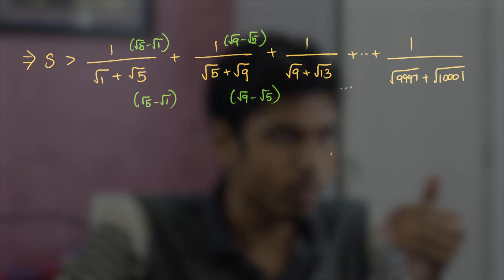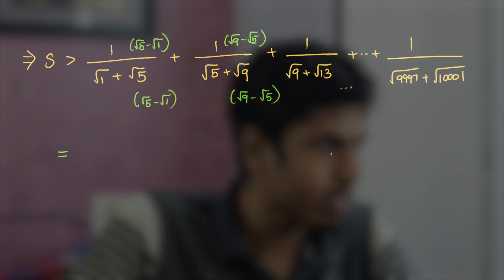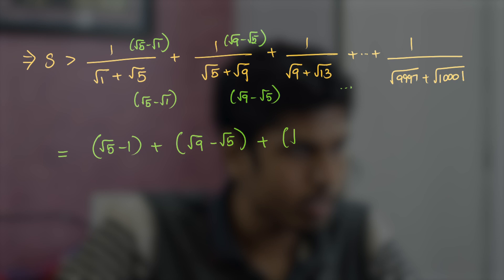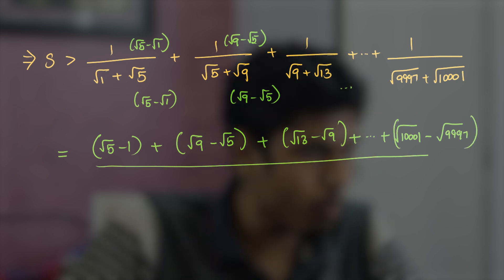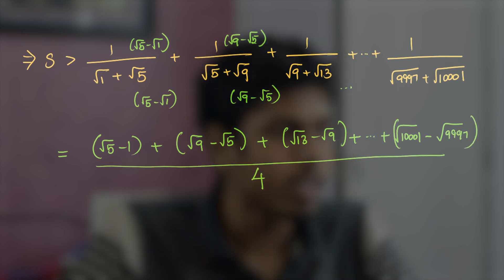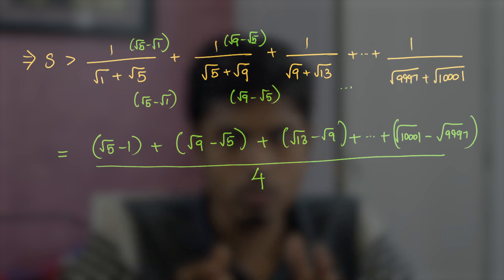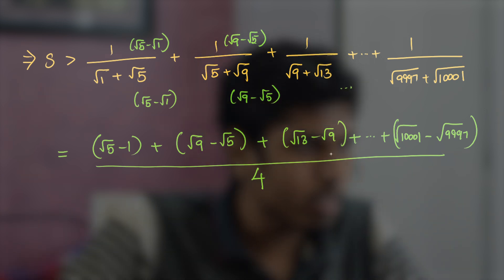This is equal to root 5 minus root 1 plus root 9 minus root 5 plus root 13 minus root 9 all the way up to under root 10001 minus under root 9997 whole upon 4. This is due to the fact that the difference between the numbers under the root for all the denominators evaluates to 4.